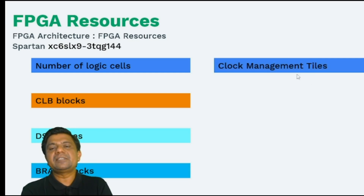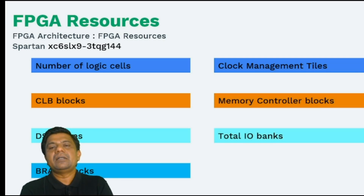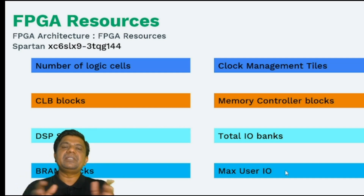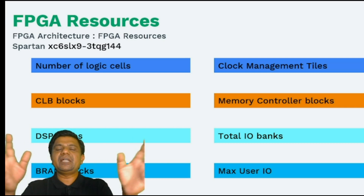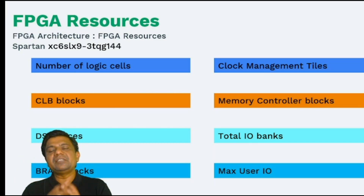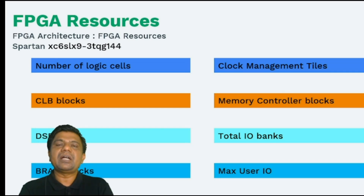Other resources include clock management tiles — how many this FPGA has; dedicated memory controller blocks; how many total IO banks; and the maximum number of user IOs available. For the Spartan 6 LX9 FPGA, we have logic cells, CLB blocks, DSP slices, block RAM blocks, clock management tiles, memory controller blocks, number of IO banks, and number of user IOs.